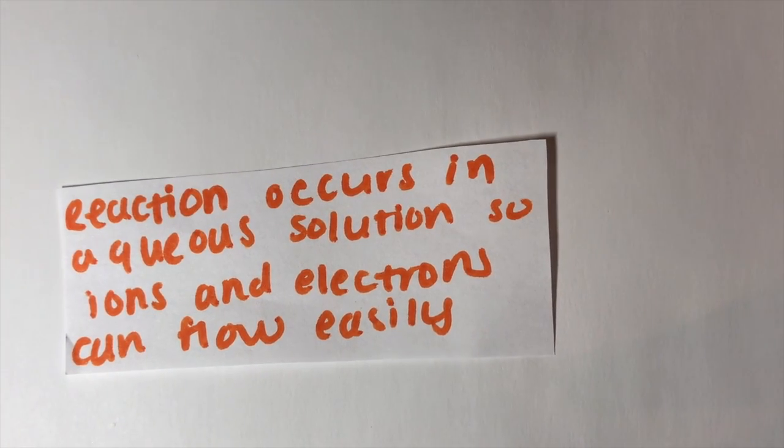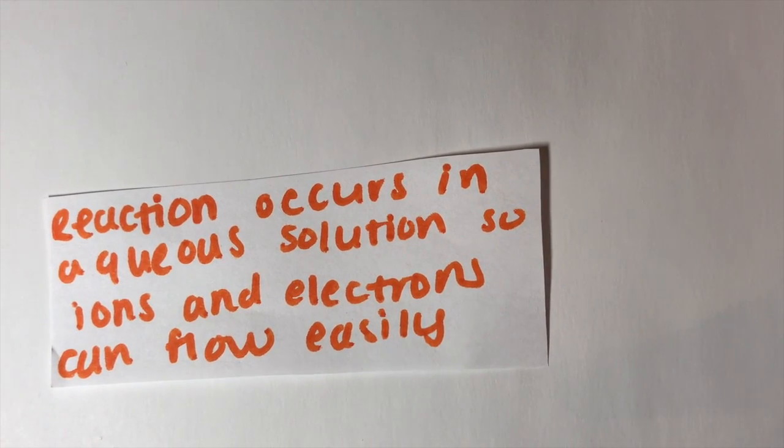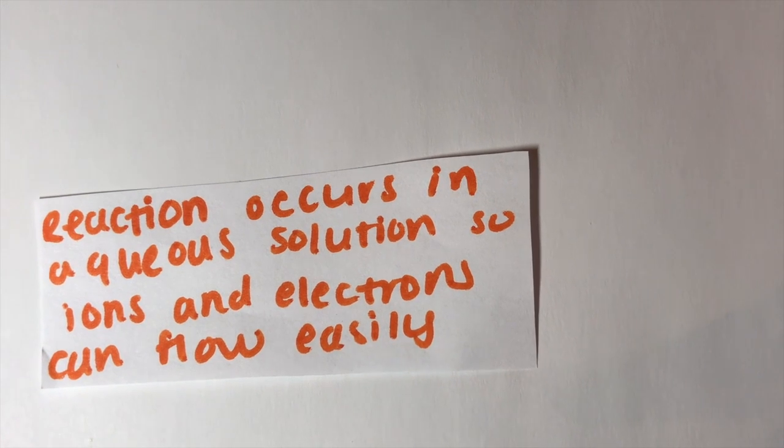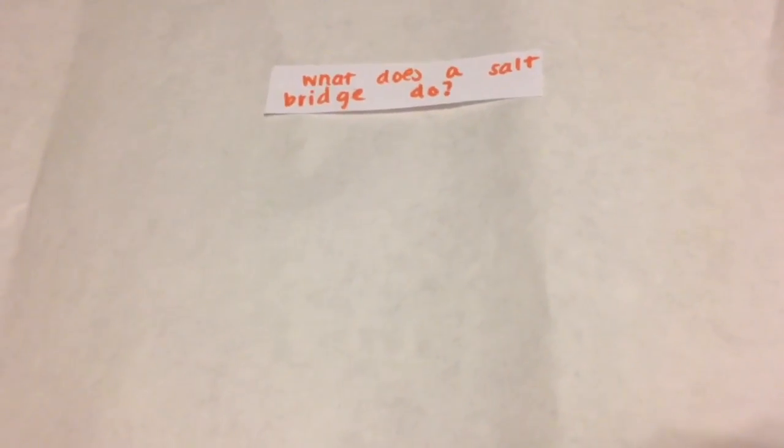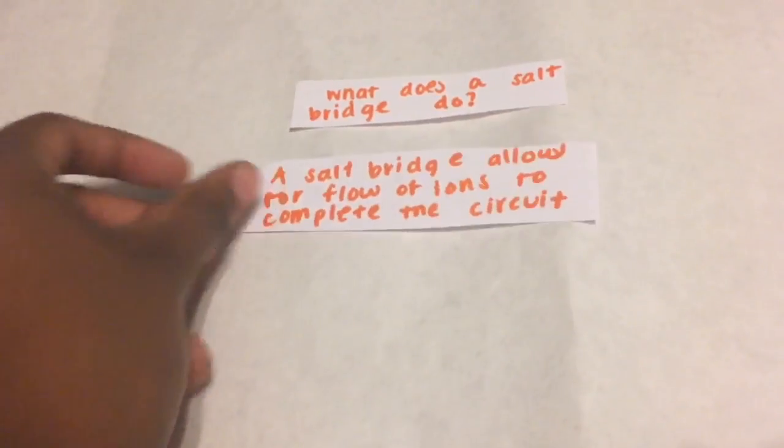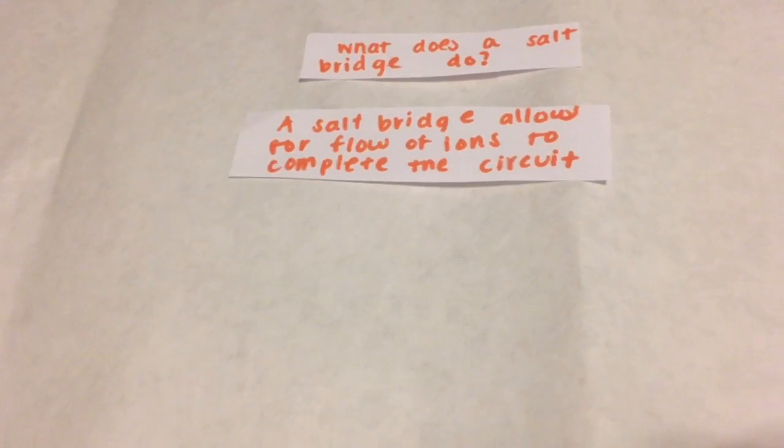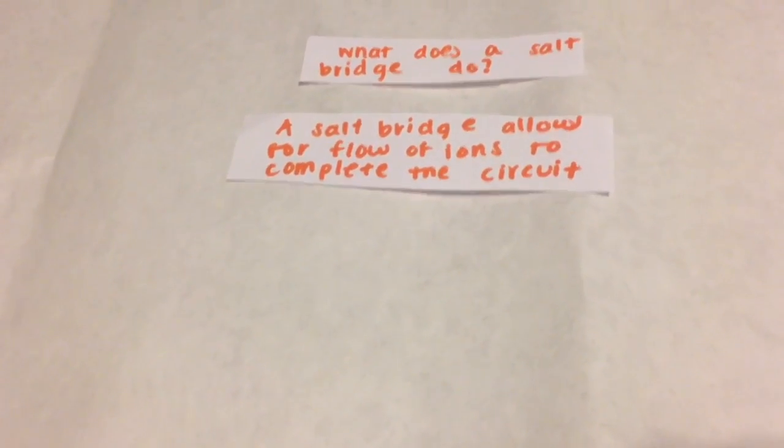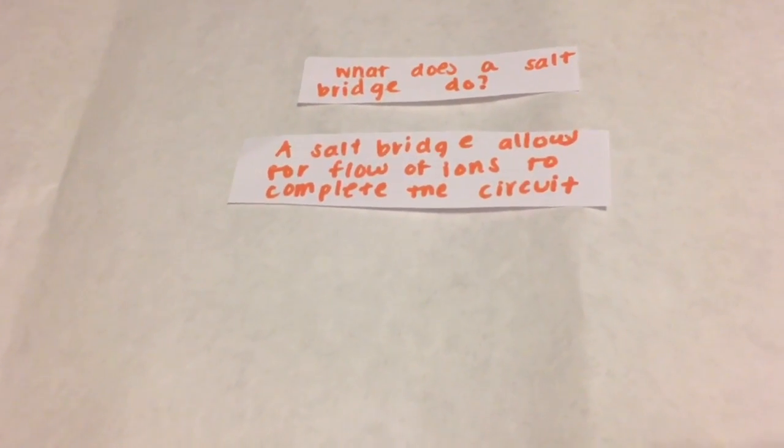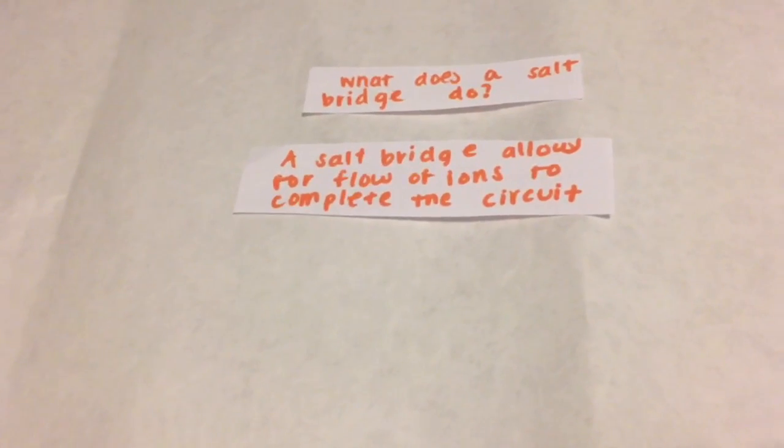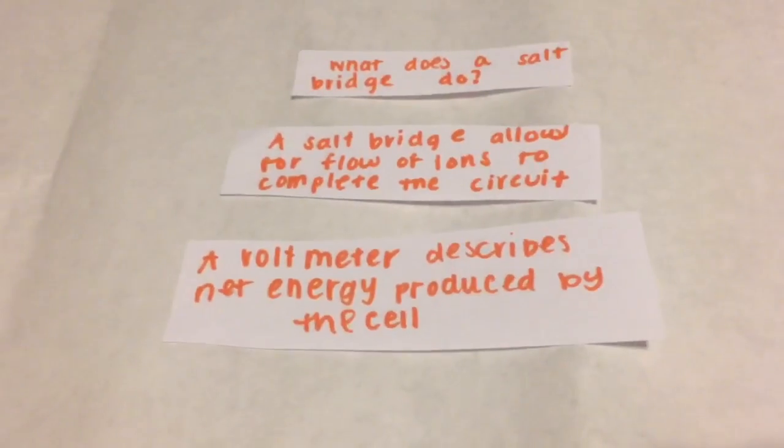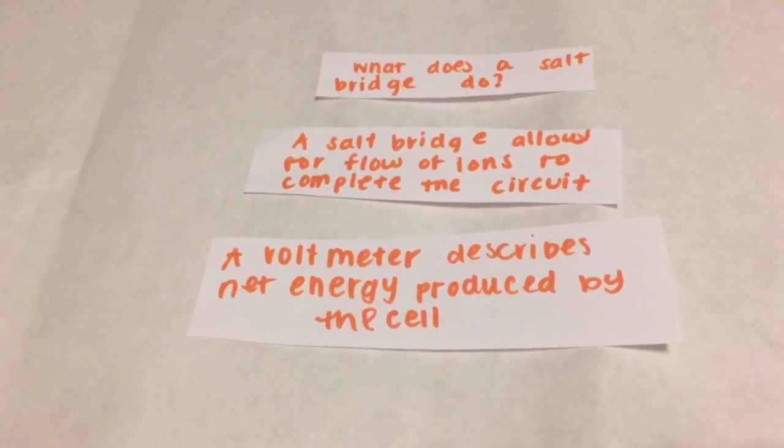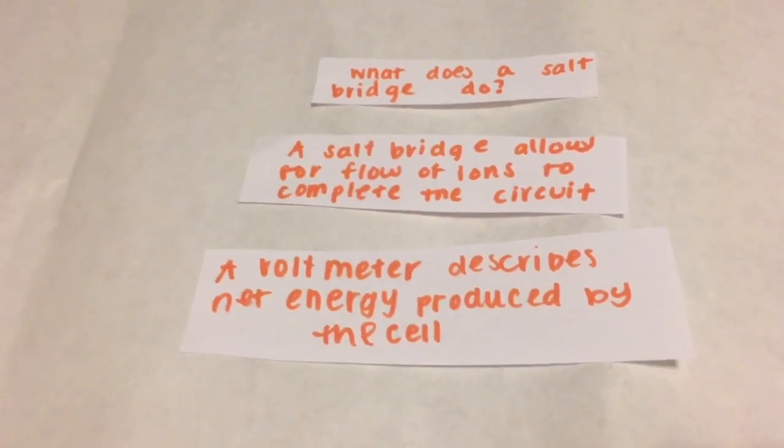Reactions in the cells occur with aqueous solutions to make reactions more safe and easier to complete. However, there are other factors that allow for the cell to function properly. Cells have a salt bridge which allows for the flow of ions. A commonly used ion in the salt bridge is KNO3. They also have a voltmeter that shows the voltage of the reaction. This helps chemists determine the net energy produced by the cell.